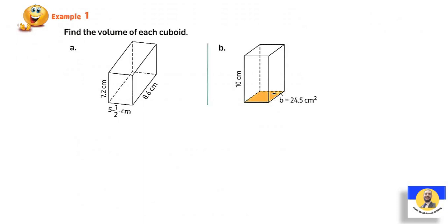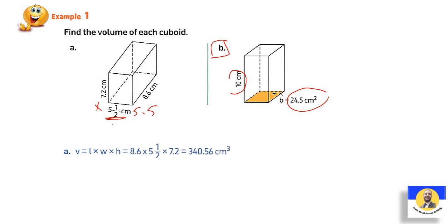Example: find the volume of each cuboid. For the first: 7.2 multiplied by 5.5 (which means 5 and a half) multiplied by 8.6 — take the three numbers and multiply. For the second: use base area multiplied by height. The first answer: 8.6 times 5.5 times 7.2 equals 340.56. The second: 24.5 times 10 — move the decimal point 1 digit — equals 245. Don't forget the unit is cubic centimeters.